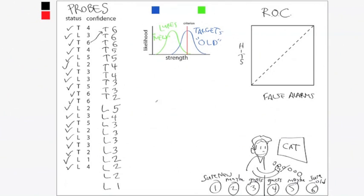What we're going to do is start out by pretending that the person was super strict about what they decided to call a target. There were six possible responses: six, five, four, three, two, one.